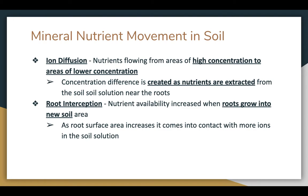Ion diffusion is the next category. This is when nutrients flow from an area of high concentration to an area of low concentration. That concentration difference is created when nutrients are extracted from the soil solution near the roots — when the plant takes up a nutrient, that creates an area of low concentration, then more nutrients will fill that void.